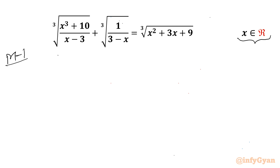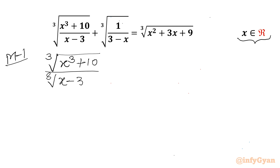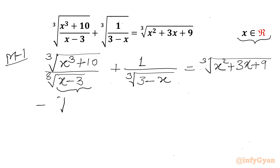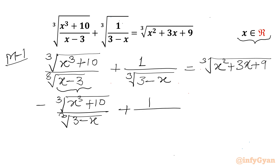Method number 1 uses the property of radicals. We have cube root of (x³ + 10) divided by cube root of (x − 3), plus cube root of 1 over cube root of (3 − x), equal to cube root of (x² + 3x + 9). Now I will take minus common from the radicand of the denominator, rewriting cube root of (x − 3) as minus cube root of (3 − x).